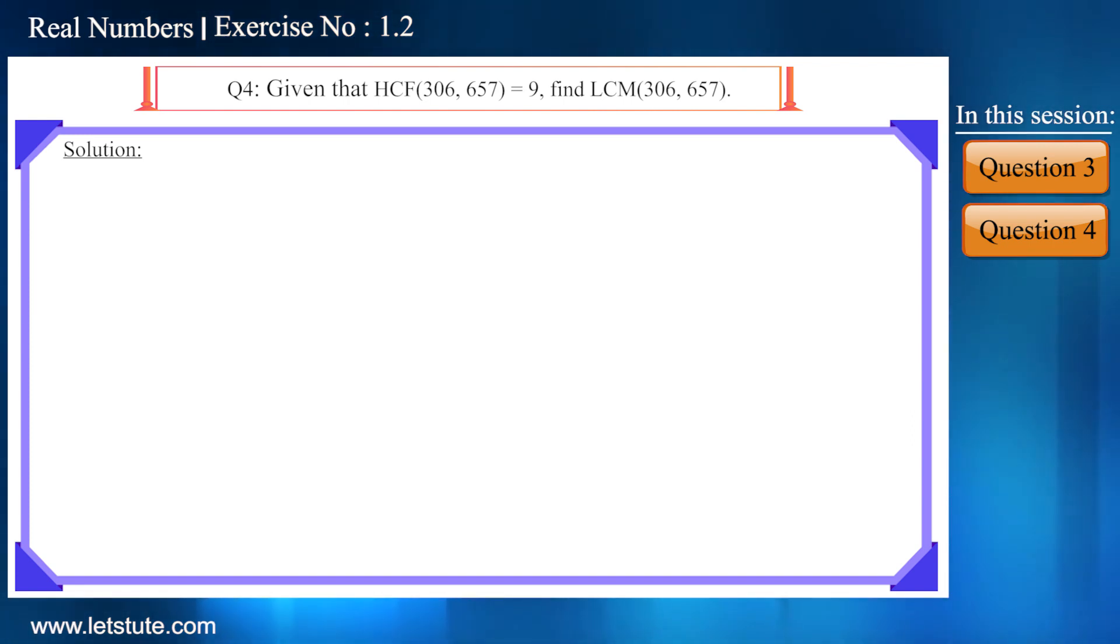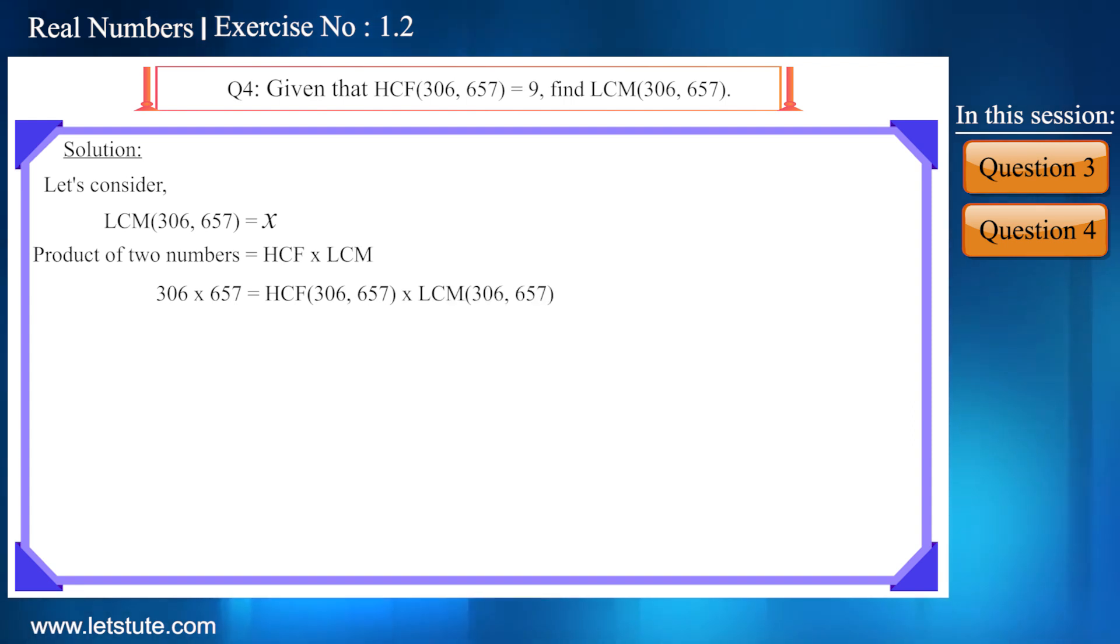Friends, we know that the product of two numbers is equal to the product of its LCM and HCF. So if we consider LCM as x, now the product of these two numbers, 306 and 657, will be equal to the product of its LCM and HCF. And HCF is given as 9, and we have considered LCM as x.